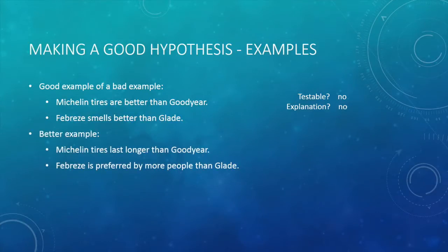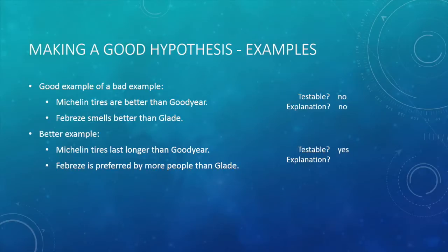Let's look now at a better example. We have now written that Michelin tires last longer than Goodyear, and Febreze is preferred by more people than Glade. Are these statements testable? Do they provide an explanation? We can test which tires last longer, and how many people prefer the smell of Febreze over Glade. But we still haven't answered the question why. Why do Michelin tires last longer? Why do more people prefer Febreze?